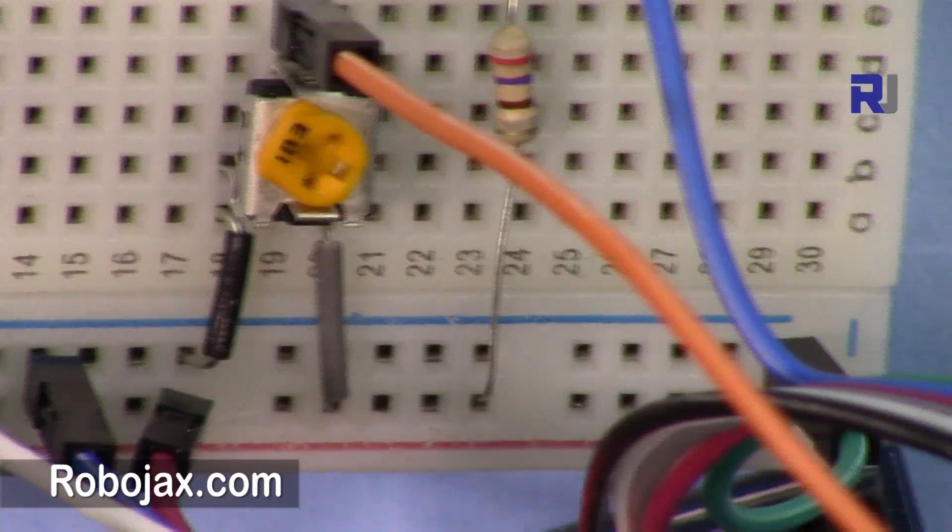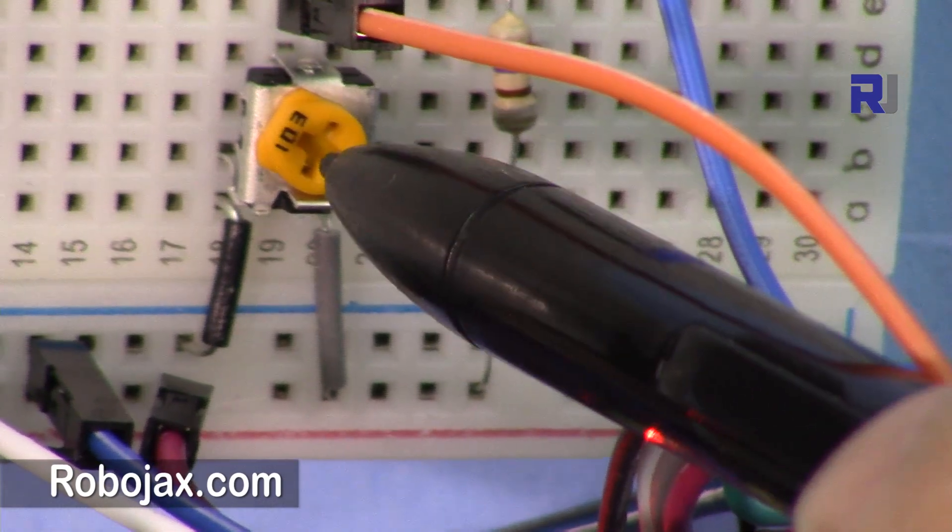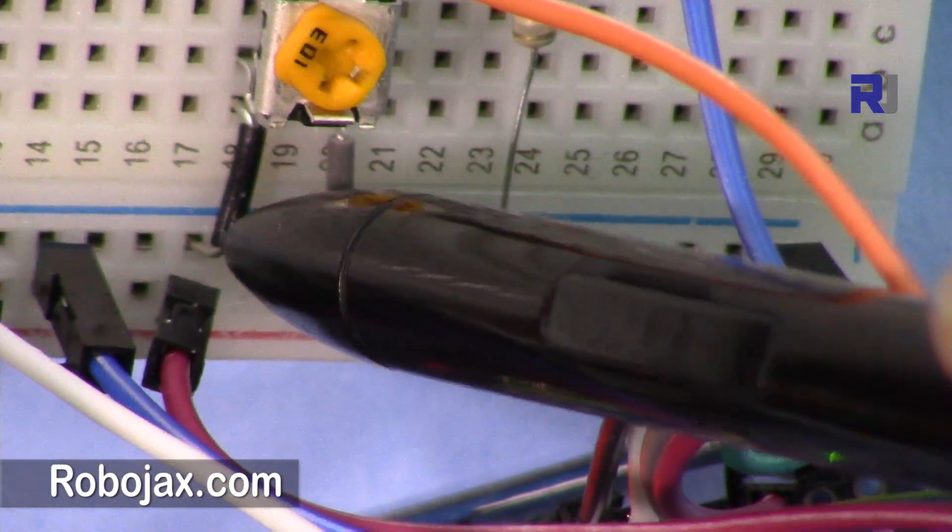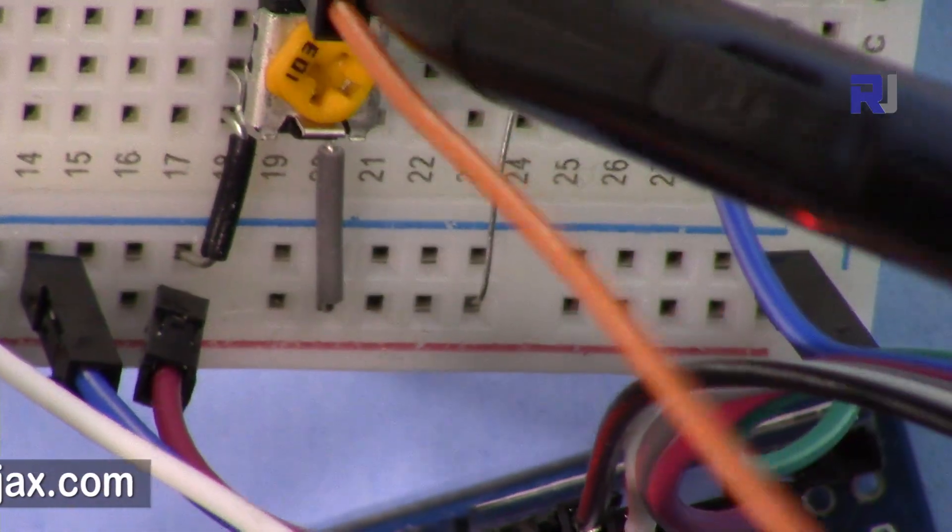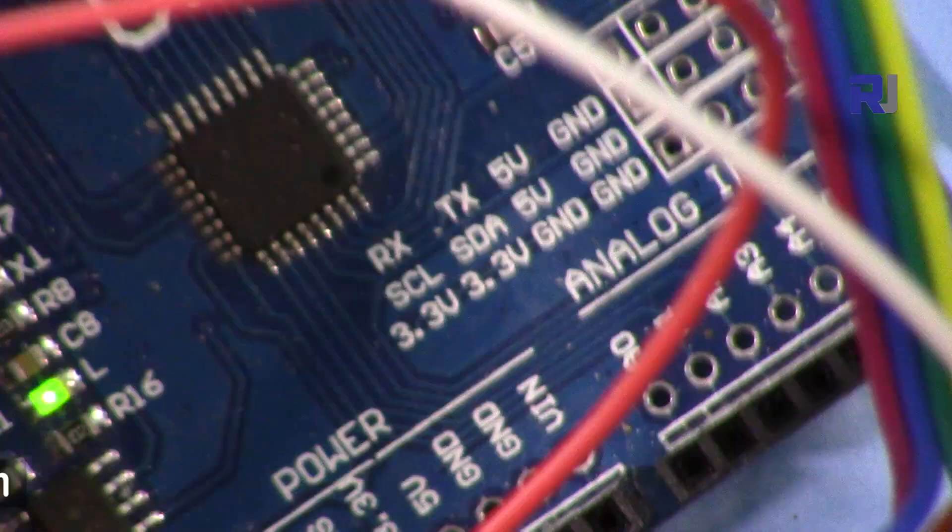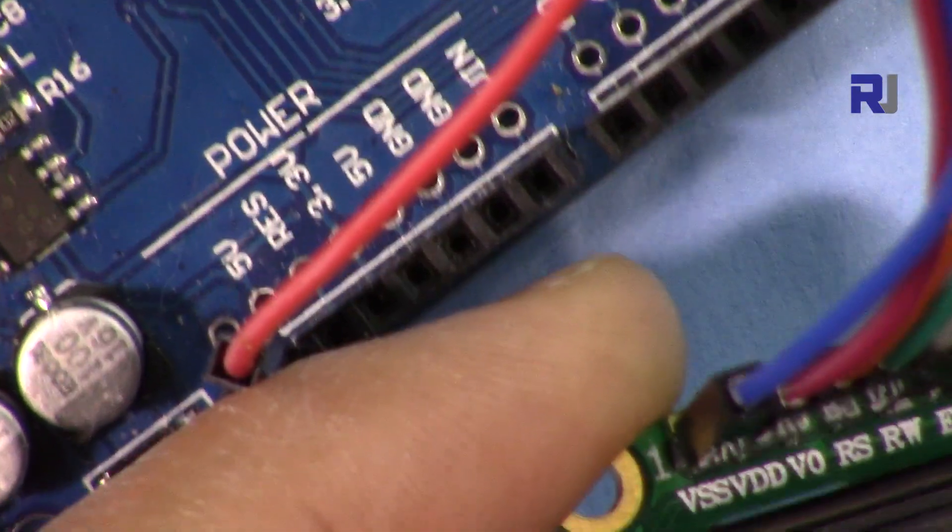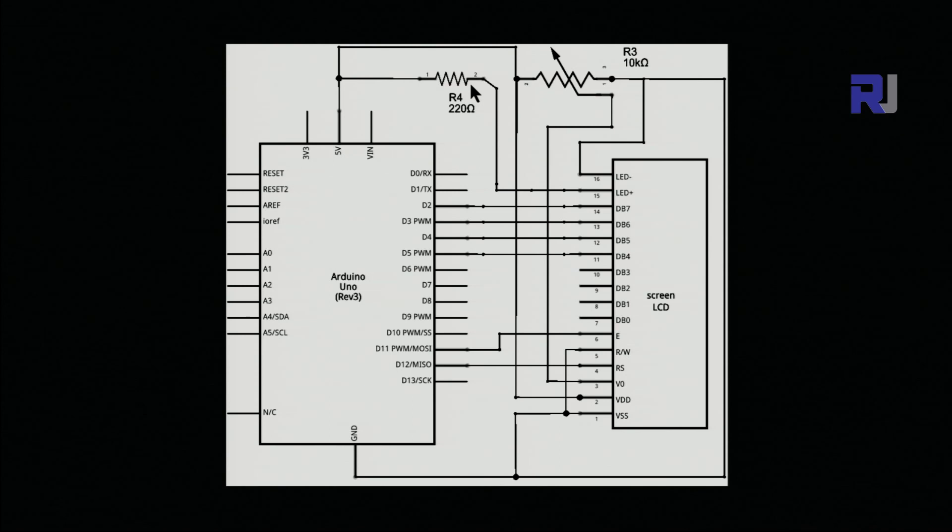The potentiometer is written as 103. That is 1 and 0 and then 3 zeros—that's a 10 kilohm potentiometer. The two wires of this one, one is connected to negative, the other one is connected to positive, and the middle one, which is the orange, has been connected to the V0 here. As you can see here, the middle one is the V0, so this V0 is connected to the middle of the potentiometer.